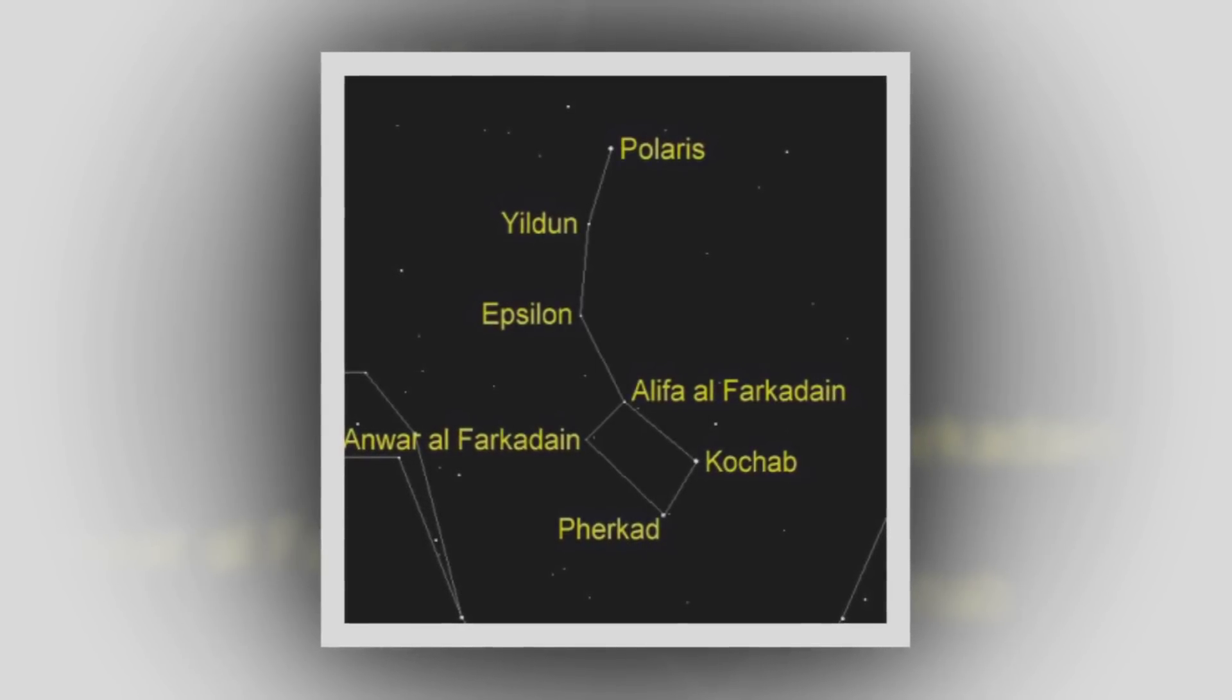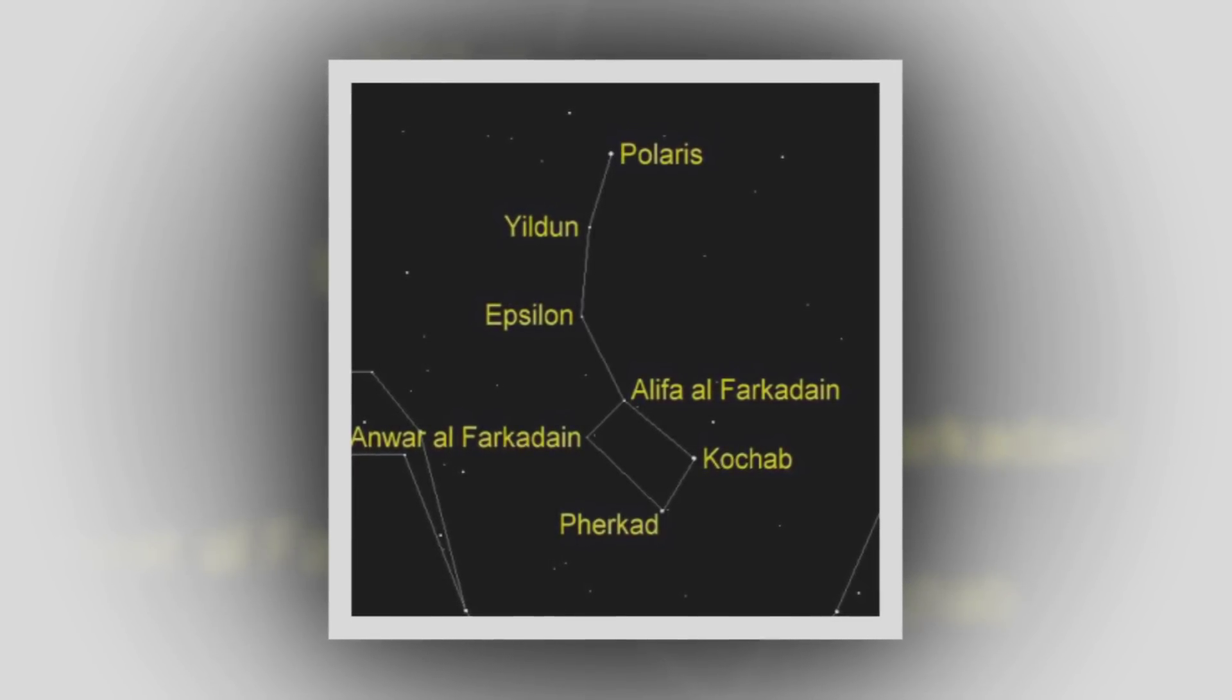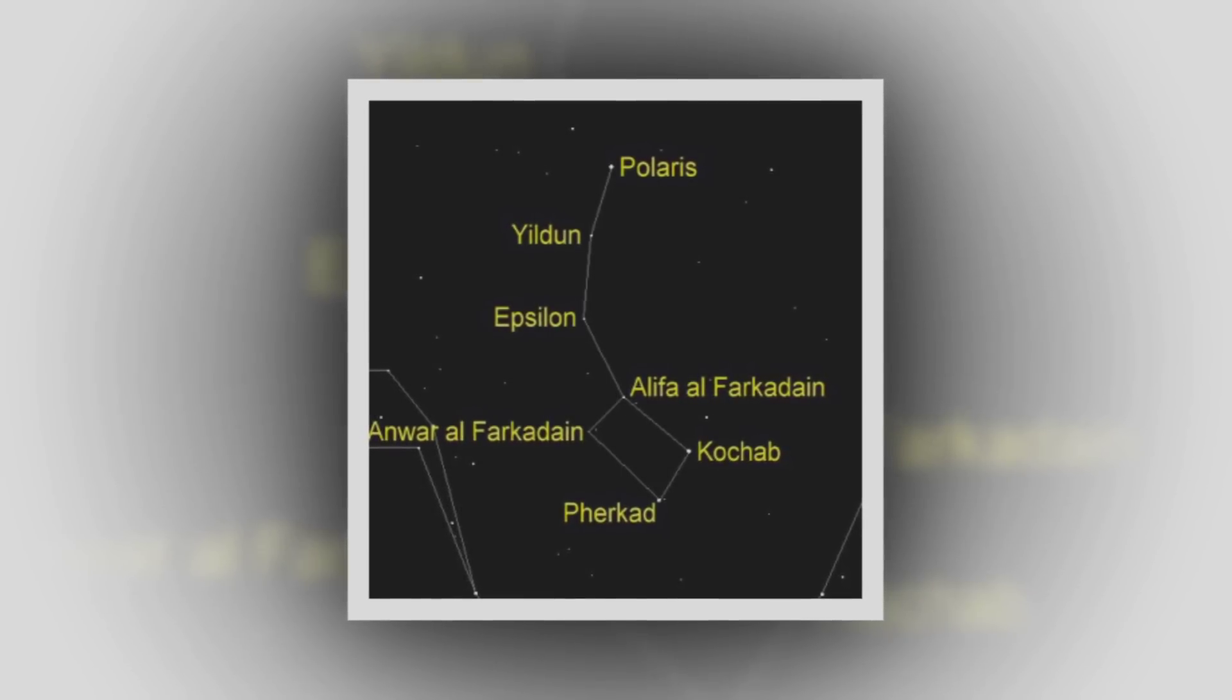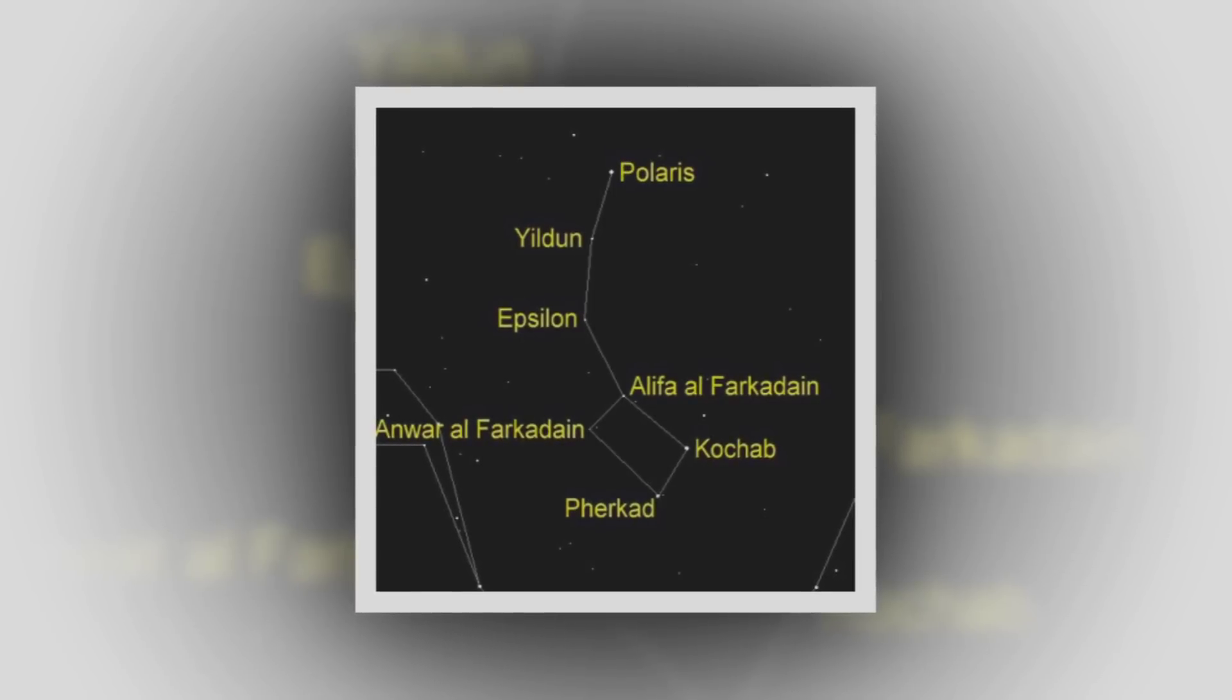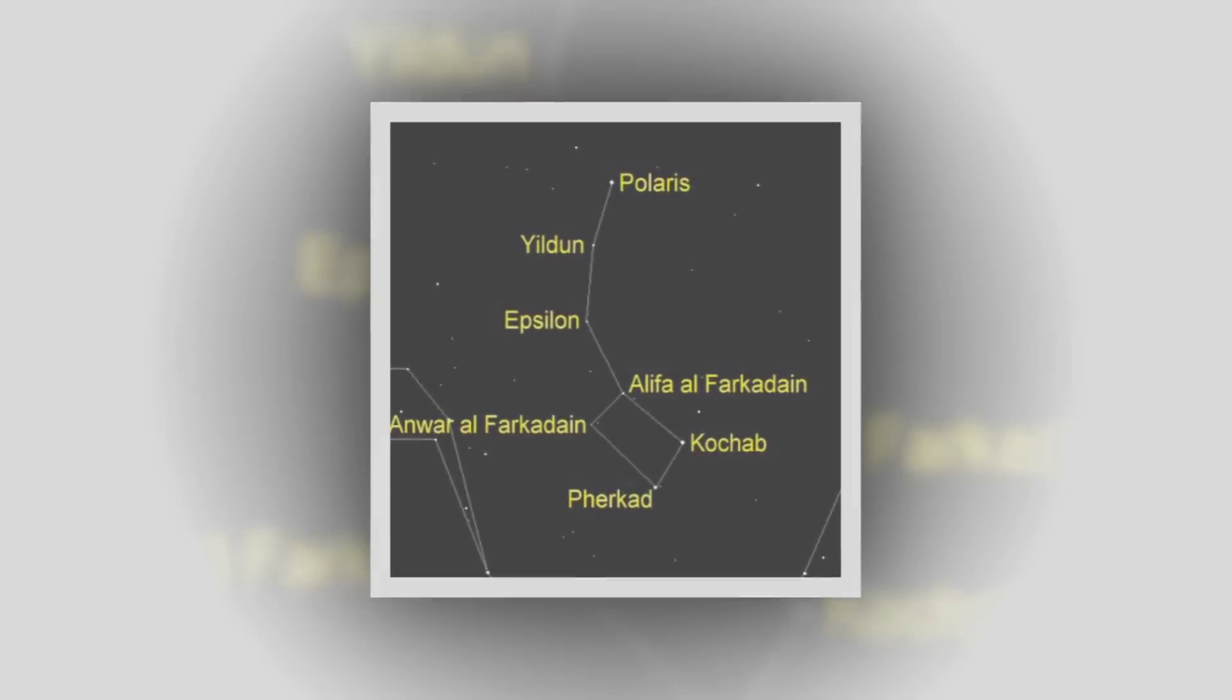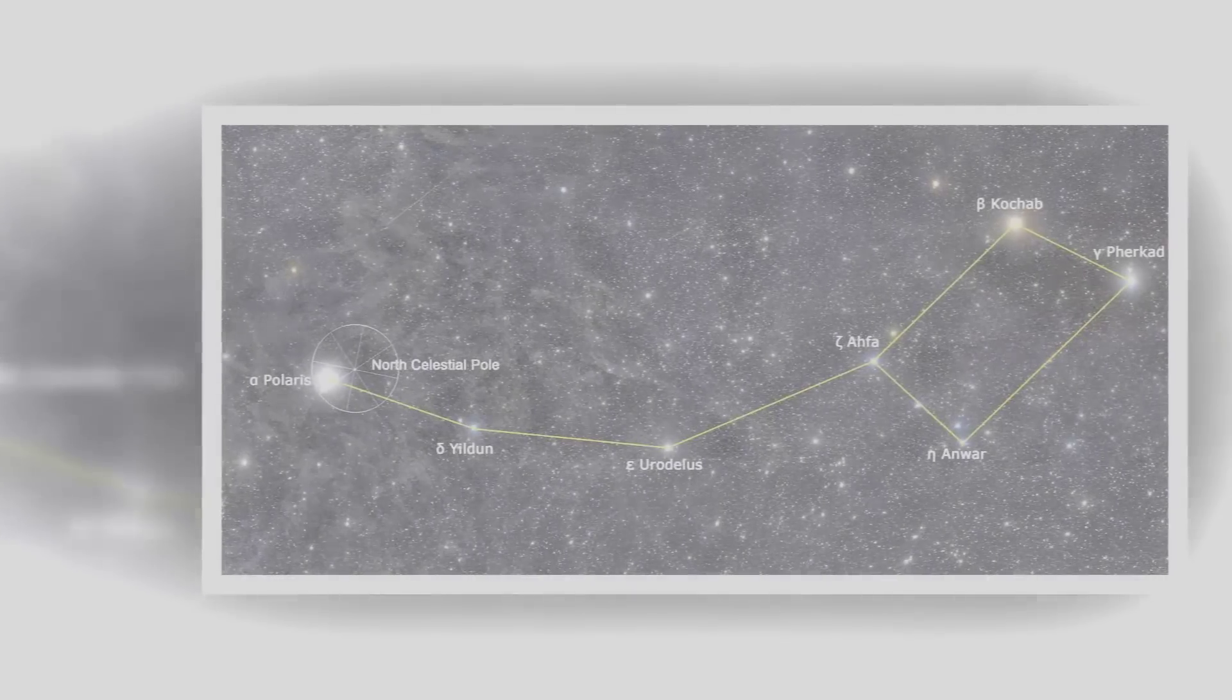Yildun, which lies below Polaris. Yildun is the fourth brightest star in Ursa Minor. Travel south of Yildun and you will see Pherkad, the fifth brightest star in the constellation. These three stars, Polaris, Yildun, and Pherkad, make up the straight handle of the Little Dipper.